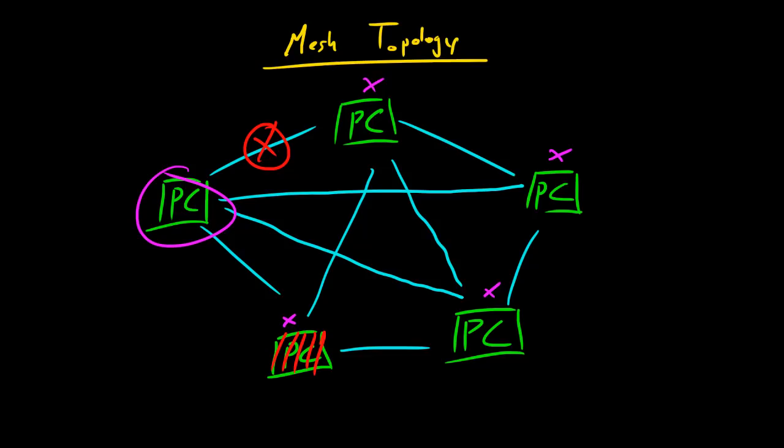Now those are some good things, but let's go ahead and talk about some bad things. As you can see, there is lots of cable in here, and whenever you have lots of cable, that means that this is going to cost a lot of money. So it's very expensive to set up a mesh topology, especially if you have a bunch of different computers, a bunch of different nodes.